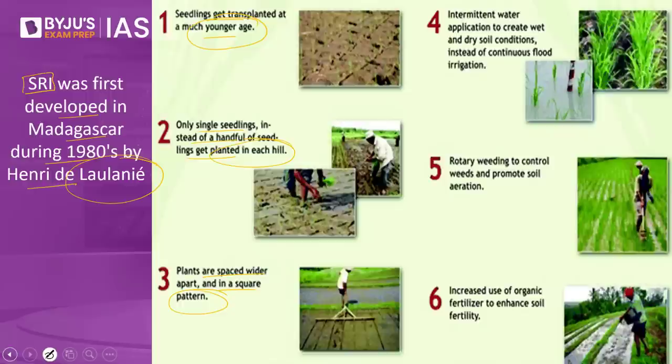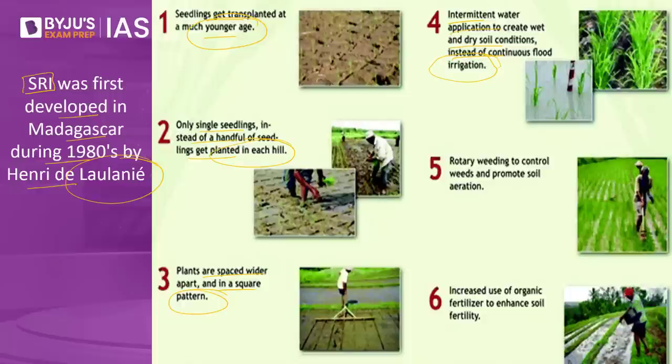SRI uses intermittent water application to create wet and dry soil conditions, instead of continuous flood irrigation. In the traditional system, continuous water supply is required — water is needed for about 35 to 40 days under normal flood conditions. In SRI, continuous flooding is not required; only intermittent irrigation is needed. The plant roots should not be starved of oxygen through flooding. Irrigation is given to maintain soil moisture near saturation initially, and water is added to the field only when the surface soil develops hair-length cracks.